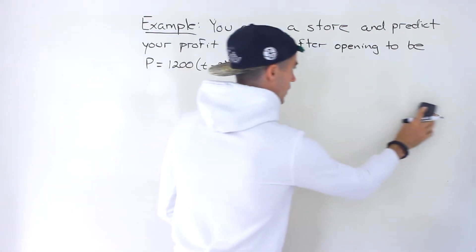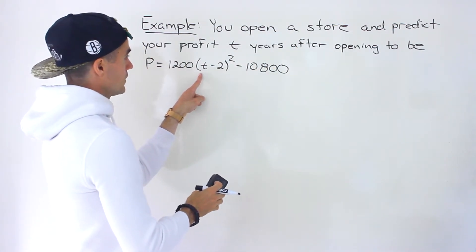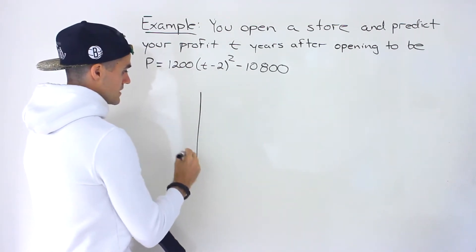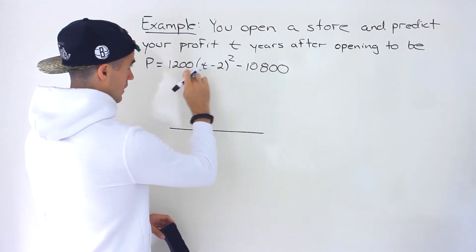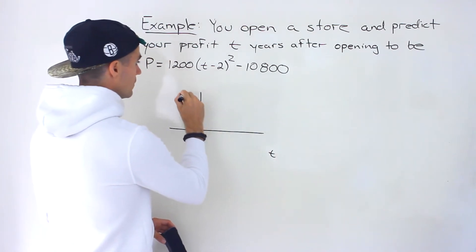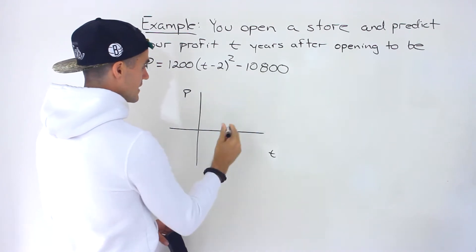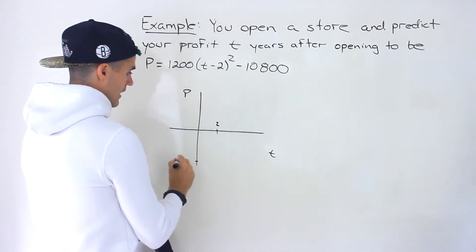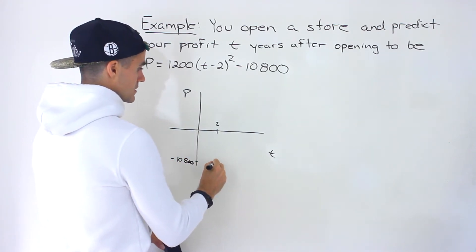Notice this quadratic we're given is in vertex form. If you draw this roughly with the equation given, it's in vertex form. We can tell that the vertex is going to be at 2 and negative 10,800. So 2 is over here and negative 10,800 is here — that's where the vertex is going to be.